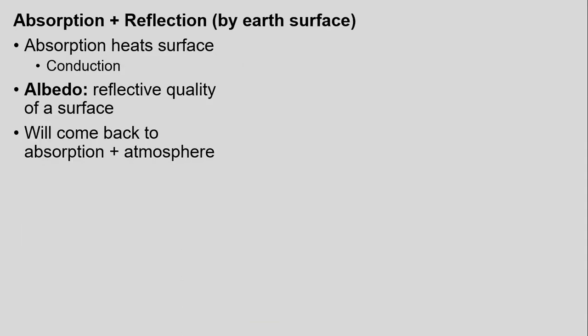We also have other processes of reflection and scattering, as we'll talk about in this lecture and the next. Absorption is just the taking in of that energy, and generally that leads to heating. In the case of incoming solar radiation from the sun, heating occurs through the process of conduction. Reflection brings us to the idea, or the term, of albedo. Albedo refers to the reflective quality of a surface — generally the higher reflectivity it has, the less absorption that surface has, and vice versa. If it has very high absorption of all that energy, it has a very low albedo.